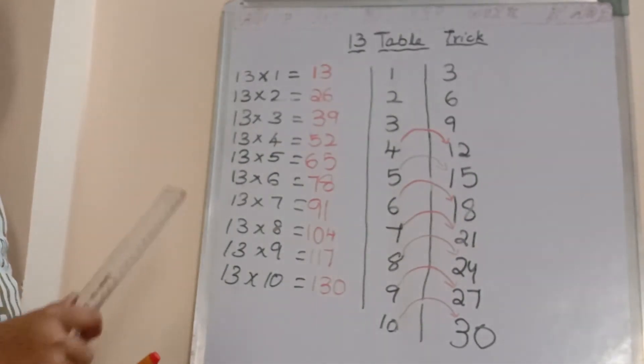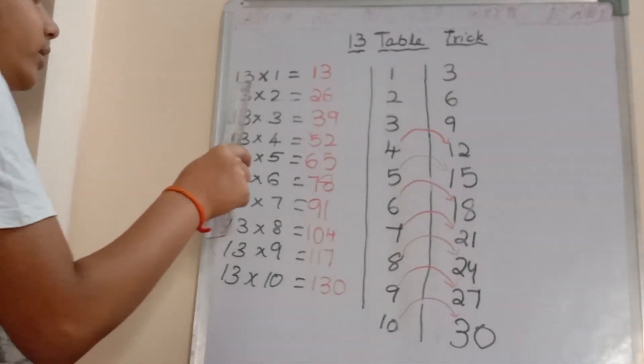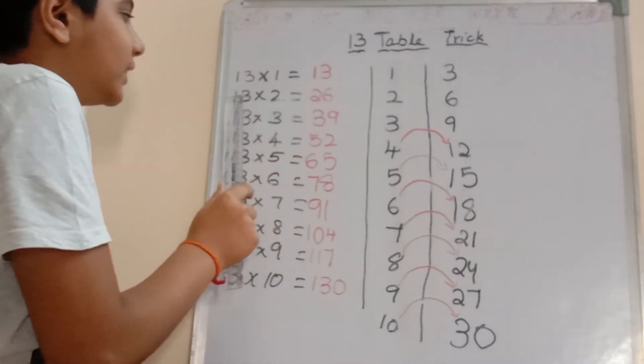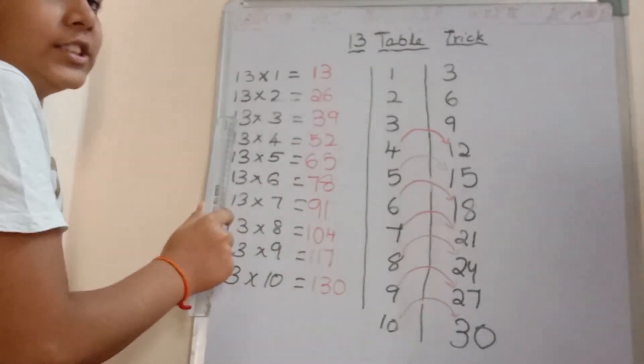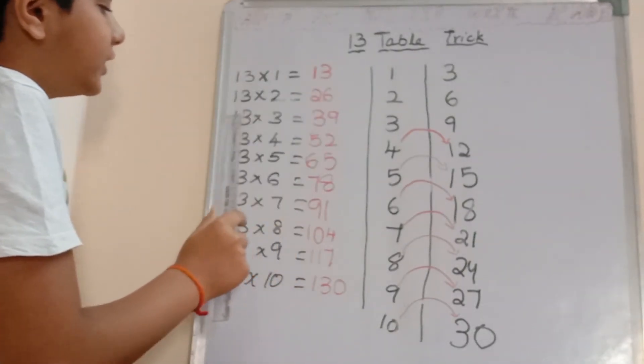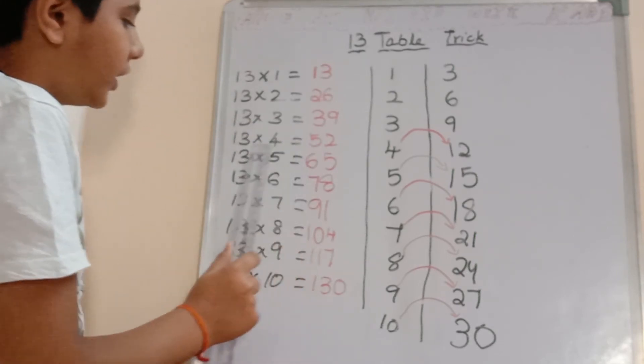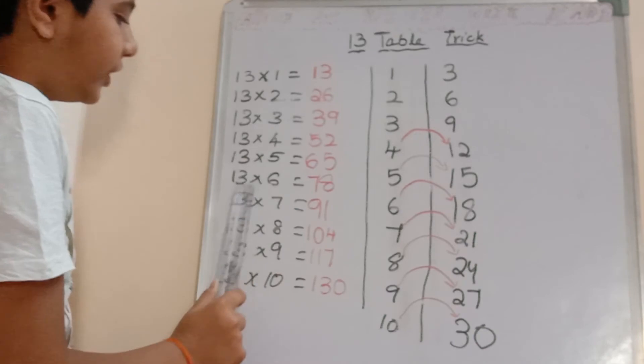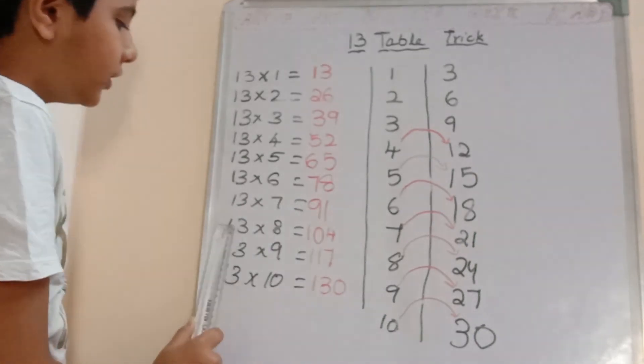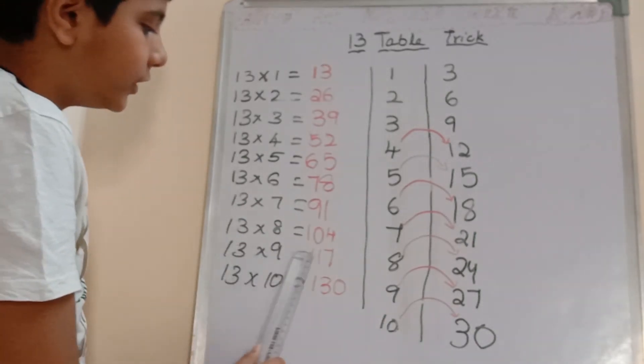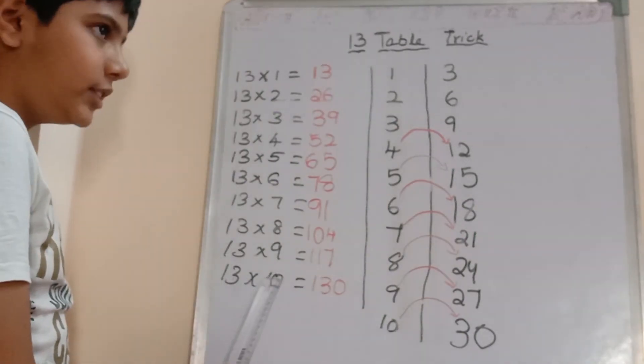Now let us check if it is correct or wrong. 13 times 1 equals 13. 13 times 2 equals 26. 13 times 3 equals 39. 13 times 4 equals 52. 13 times 5 equals 65. 13 times 6 equals 78. 13 times 7 equals 91. 13 times 8 equals 104. 13 times 9 equals 117. 13 times 10 equals 130.